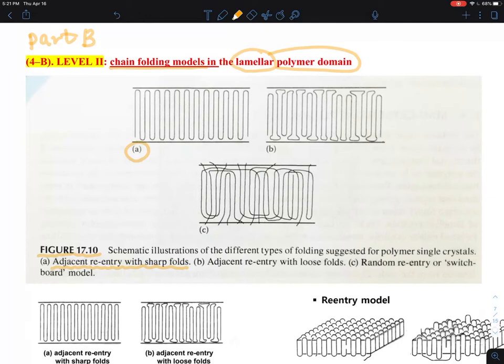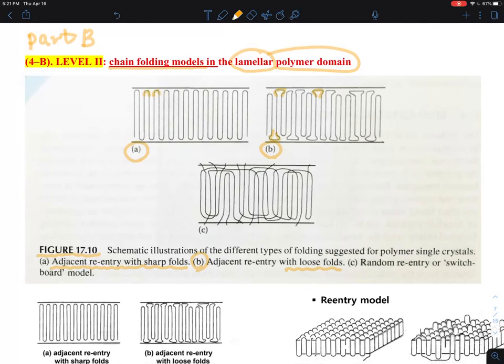The second one, B, is also the re-entry model, but you have a loose fold. So this is something that's a source for the loose chain fold, and that's a source of the amorphous regions starting to form. This chain is forming a little bit more loopy and not making a very sharp turn like shown in A.